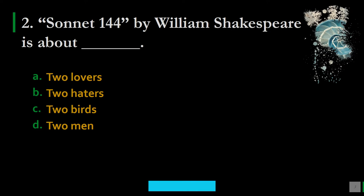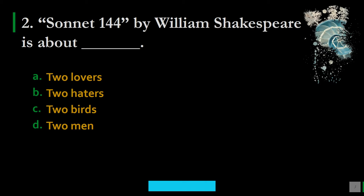Question 2: Sonnet 144 by William Shakespeare is about — A. Two lovers, B. Two haters, C. Two birds, D. Two men. The correct option is A, two lovers. Shakespeare addressed his sonnets to different subjects — some to his friend, some to a mysterious lady called the dark lady — and most sonnets are dedicated to love. So the answer is two lovers.